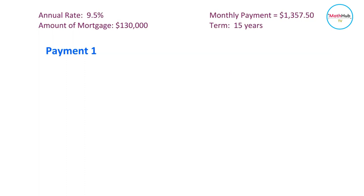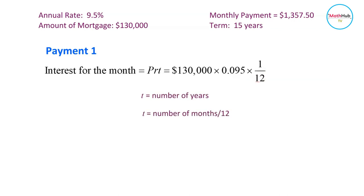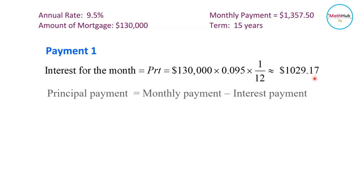To compute the interest of the month, use the simple interest formula: Interest = P × R × T (principal times rate times time). The principal, the amount of the mortgage, is $130,000 times the rate per year, 0.095 (9.5%), times 1/12, because we want the interest per month. $130,000 × 0.095 ÷ 12 equals $1,029.17.